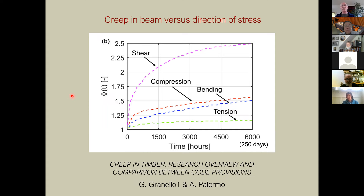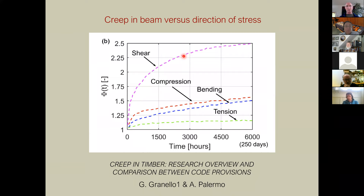Creep also depends on the direction of stress. Shear stress — where you're trying to slide the wood over itself — produces the highest creep. Then comes compression, then bending, which is mostly what we see in violin plates. Tension produces the least creep. In tension, the primary creep phase appears to level off relatively quickly, whereas in shear the primary creep phase extends much longer — even over thousands of hours.